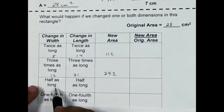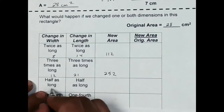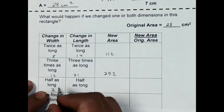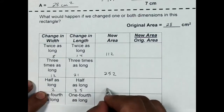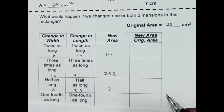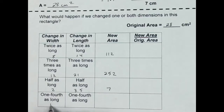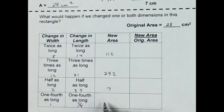Now I want to do half as long, so that's going to be half of 4 is 2, half of 7 is 3.5, and 2 times 3.5 comes out to be 7. And then if I do 1 fourth as long, 1 fourth of 4 is 1, 1 fourth of 7 is 7 fourths, so that comes out to be 7 fourths for my area.